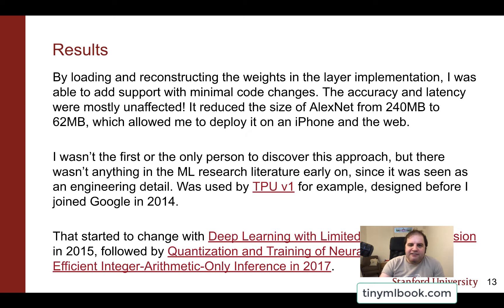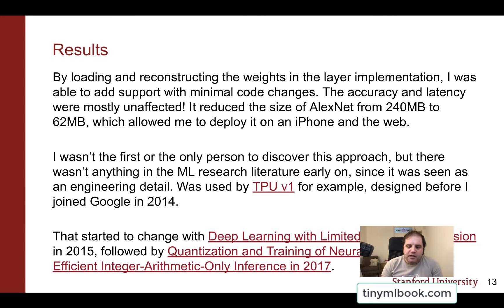To my great surprise, this first attempt actually worked. The accuracy and latency of my code and the model really didn't seem to be substantially affected at all, but it reduced the size by 75%, which meant I could deploy this on an iPhone application and even as a large webpage. I'm walking you through my process because I think it might be helpful to understand how we get to quantization from the usual floating point math associated with neural networks, but I'm not at all claiming to be the first or only person to discover this approach.